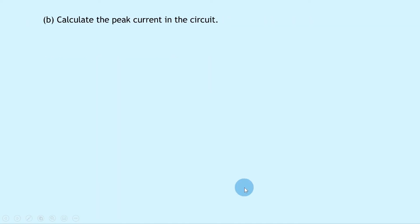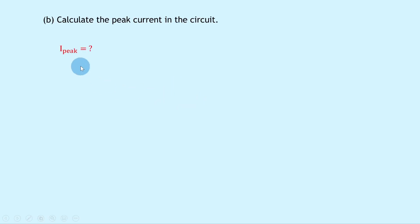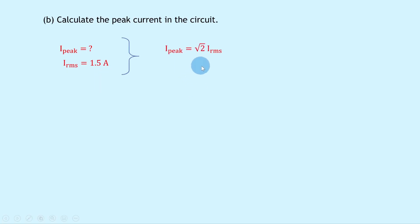Part B says to calculate the peak current in the circuit. Now that we know the RMS current, we can use that to calculate the peak current. Writing down what we know, we're trying to find Ipeak. We know that Irms is 1.5 amps. Writing down our equation, we have Ipeak equals root 2 times Irms. Substituting in gives root 2 times 1.5, and putting that into your calculator should give you an answer of 2.1 amps.